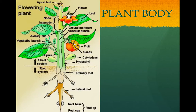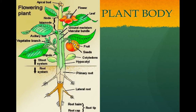When we look at the plant body, we divide it into the roots and the shoots. The roots are below ground, and they anchor the plant, but their primary function is to absorb water and nutrients. Root hairs are tiny little extensions, and they increase the surface area for better water absorption.